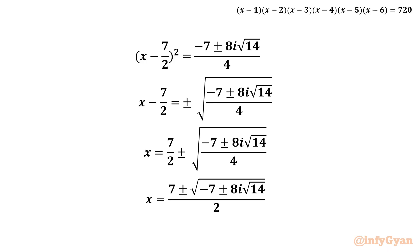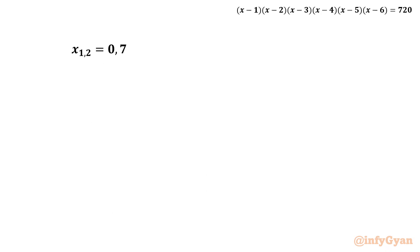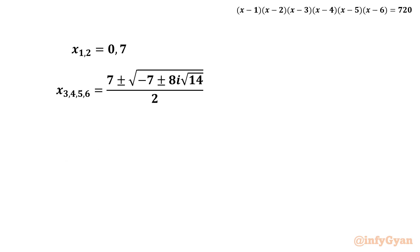In total we have 2 real solutions: x = 0 and x = 7. And 4 complex solutions from the second equation — with the ± inside the radicand (7 + and 7 −) each contributing 2 solutions. So in total we have 2 real and 4 complex solutions, accounting for all 6 roots of the hexic equation.